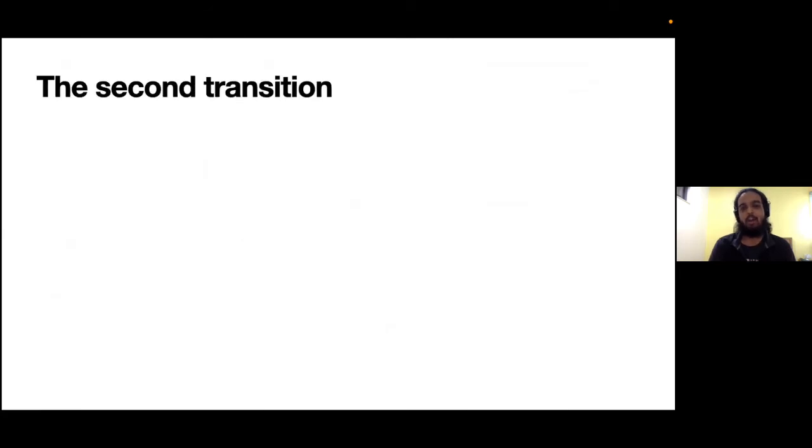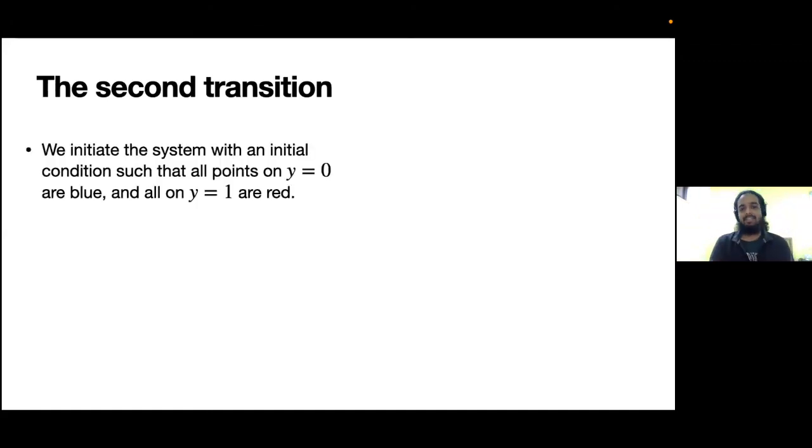With this I move to the final part of my talk where I talk about the second transition that takes place in this model, which has not been mentioned much in literature. Following the previous talk, now suppose we start with a line initial condition where all the points on your lattice on the points on y=0 are blue, and all the points on y=1 are red. So we have a line of predators and a line of prey, and we let the system evolve.